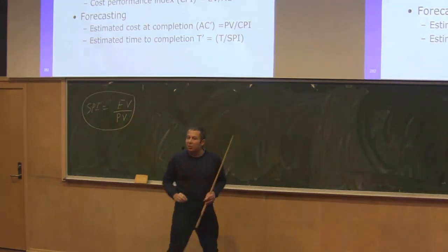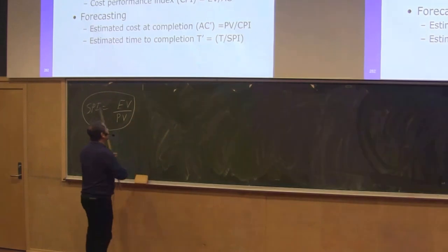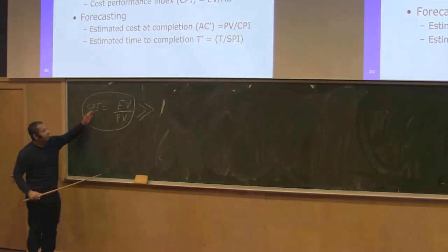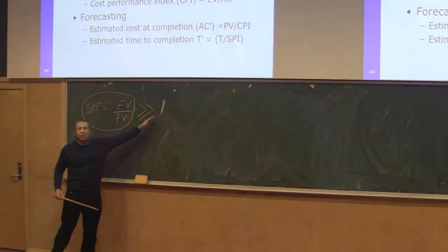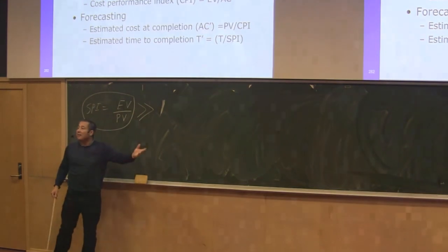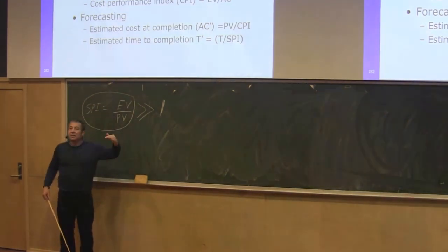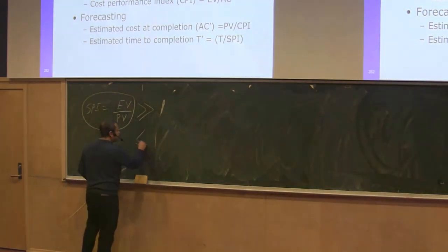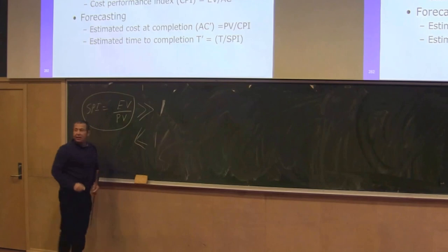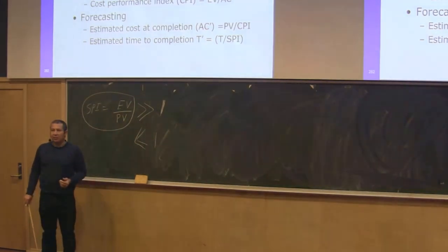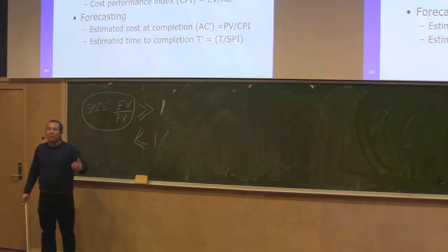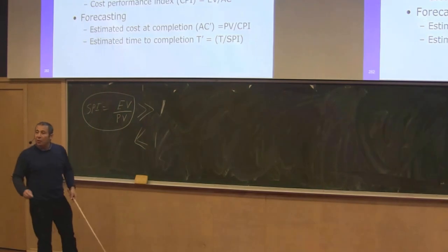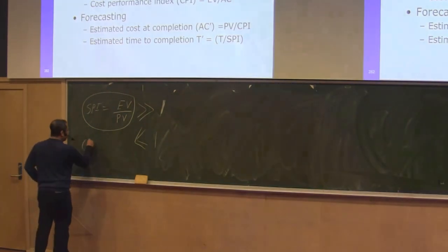If the SPI is greater than one, it means you are ahead of schedule. If it is much less than one, it means you are lagging behind schedule and will need to take action. The second important parameter is the Cost Performance Index, CPI.